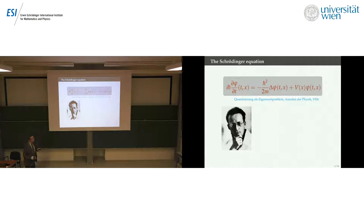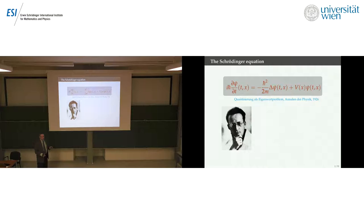Since V is real and all the constants are real except the imaginary unit, that means the unknown Ψ must be complex — it couldn't be real and still satisfy the equation. The wave function Ψ is a complex function; the general thing said about it is that it tells you everything about the state of the system at time T, encoded in Ψ(T,X).